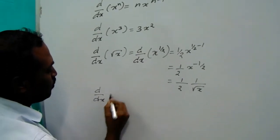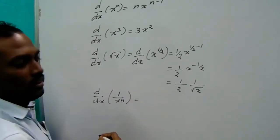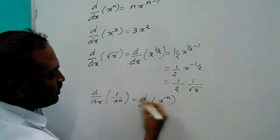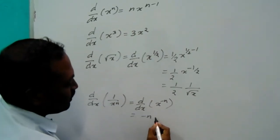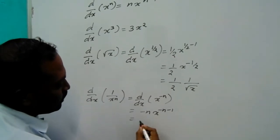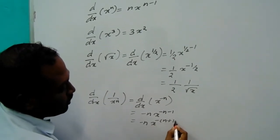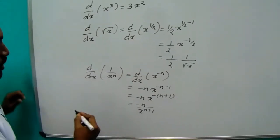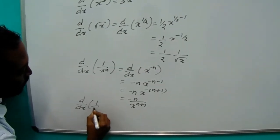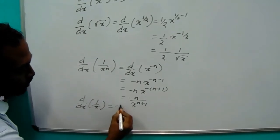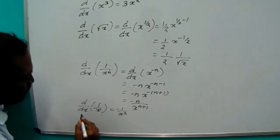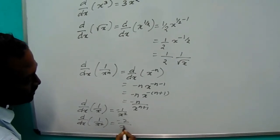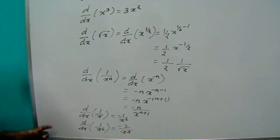What is the differentiation of 1/x^n? The same concept: x^n goes to the numerator, making it x^(-n). Applying the formula, you get minus n times x^(-n-1), which simplifies to -n/x^(n+1). For example, d/dx of 1/x gives -1/x², and d/dx of 1/x² gives -2/x³. This is the basic concept of differential formula.